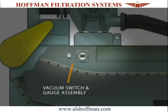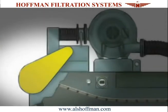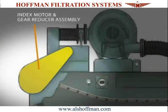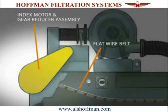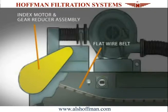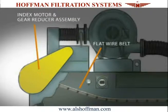A vacuum switch monitors the vacuum level inside the filter. As the filter cake builds on top of the filter media, the vacuum level rises. At a preset point, the vacuum switch actuates the index drive, which moves the flat wire media carrying belt, discharging spent media into a collection bin and introducing new, clean media. When the vacuum level drops below the preset point, the index drive ceases. Standard vacuum switches are field adjustable, so the actuation point can be reset if the customer's process changes over time.